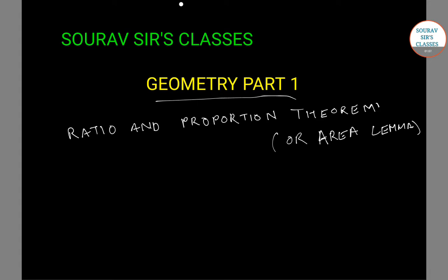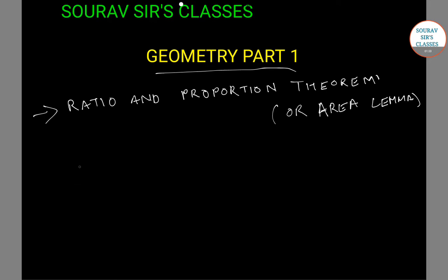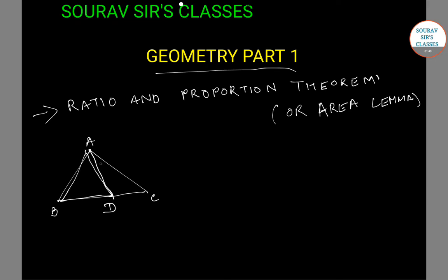This theorem states that if there is any point D on the side BC of triangle ABC. Let's first draw triangle ABC — here is our triangle ABC, and D is any point on side BC. If we join A and D, we get two triangles: the first one being triangle ABD and the next one being triangle ADC.